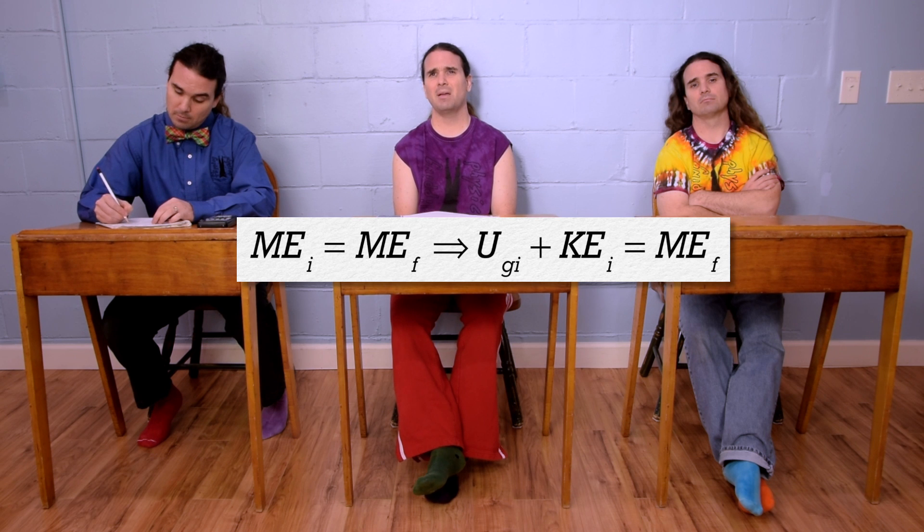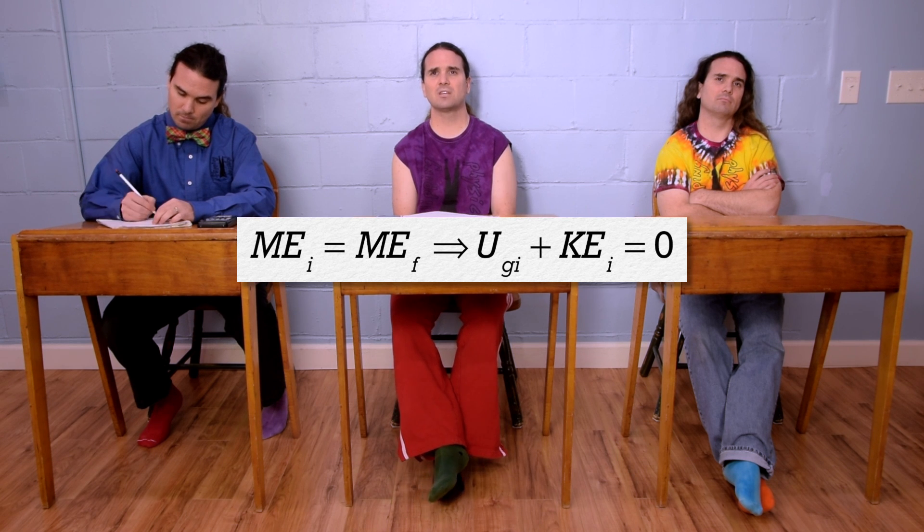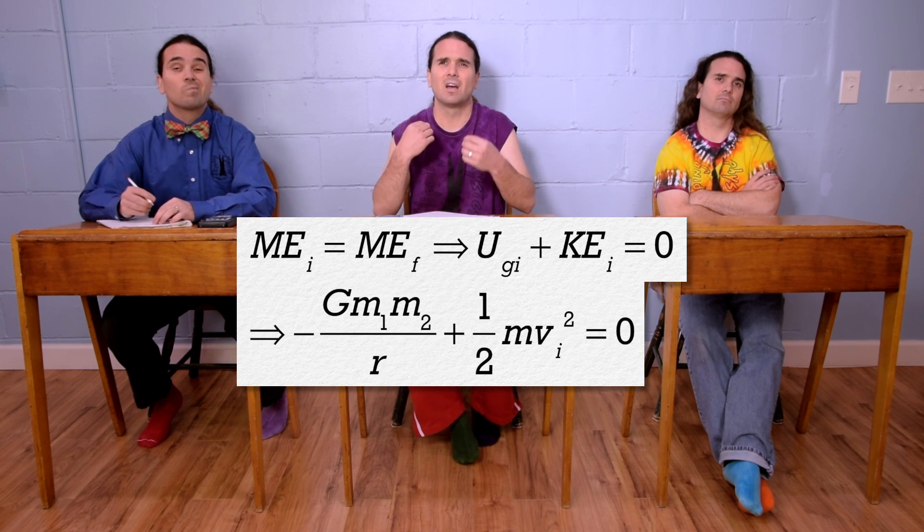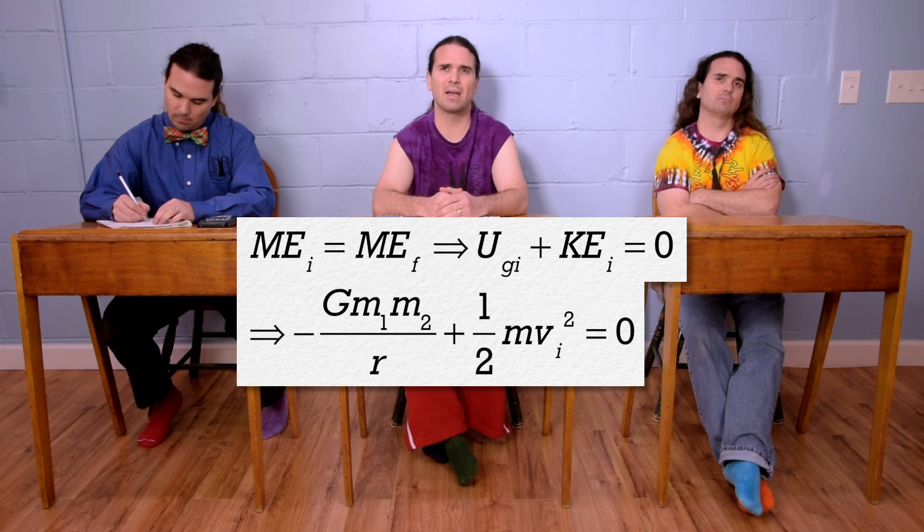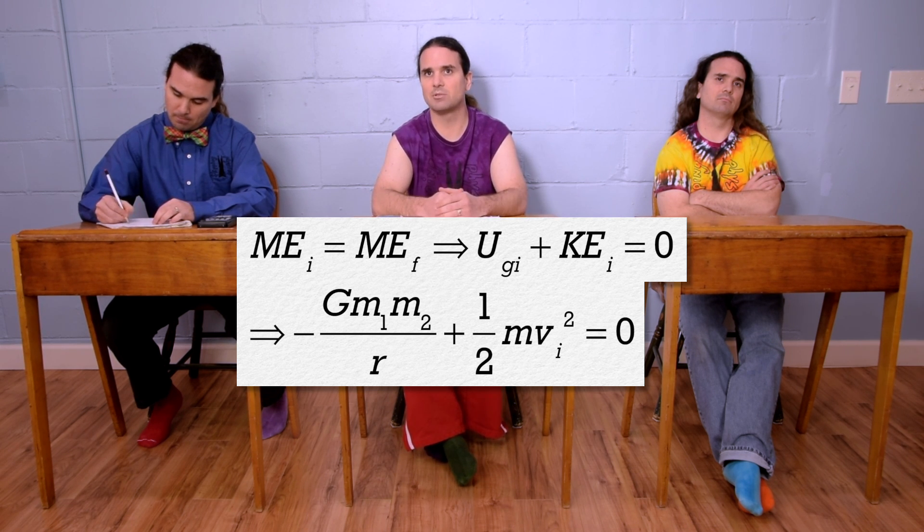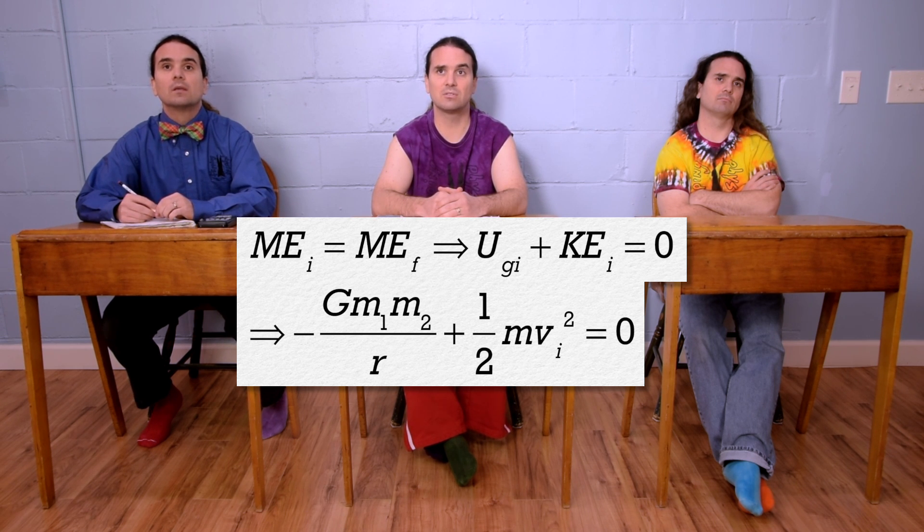And I guess I will mention there is no elastic potential energy of any sort in the problem. Substituting in equations gives us the negative of the universal gravitational constant times mass 1 times mass 2 divided by r, the distance between the centers of mass of the two objects, plus 1 half mass times velocity squared equals zero.